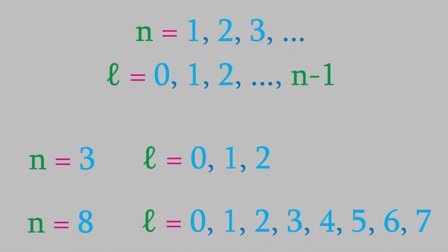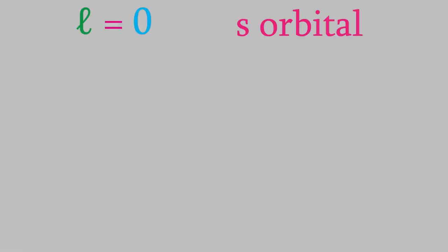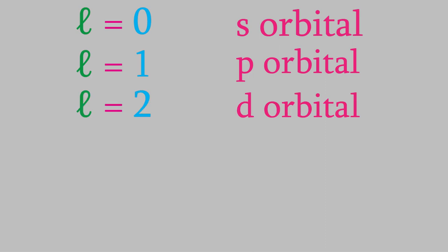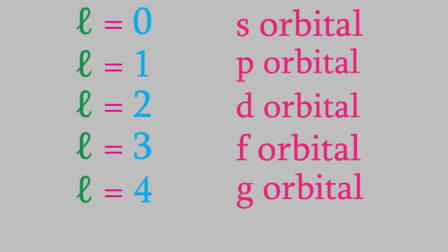Each value of L has a different shape, and each has a different name. We saw that the names of the orbitals are S for L equals zero, P for L equals one, D for L equals two, and F for L equals three. After that, the names of the orbitals just go in alphabetical order. So, L equals four will be a G orbital, and L equals five will be an H, and so on.